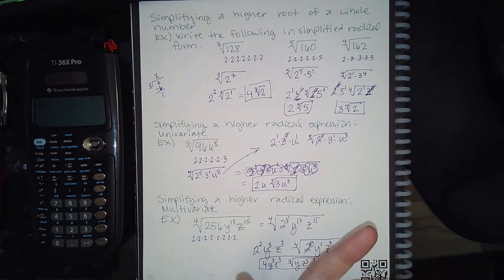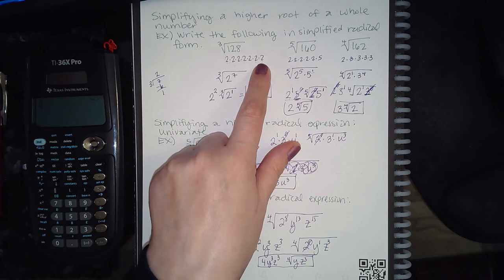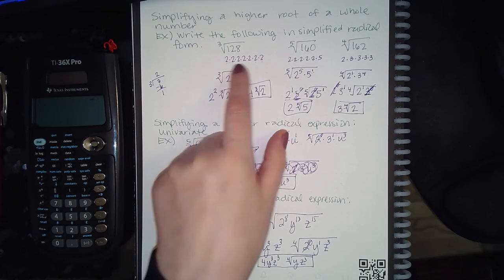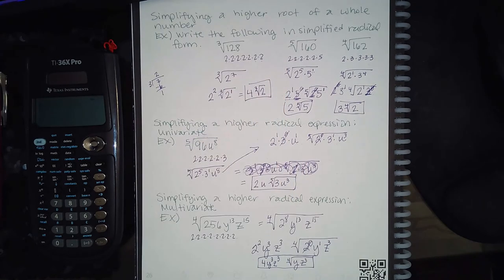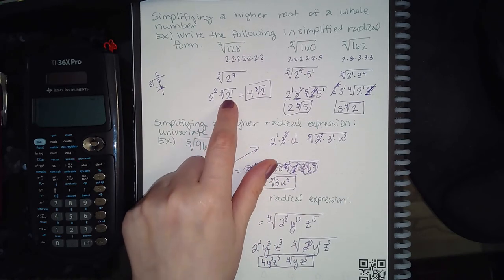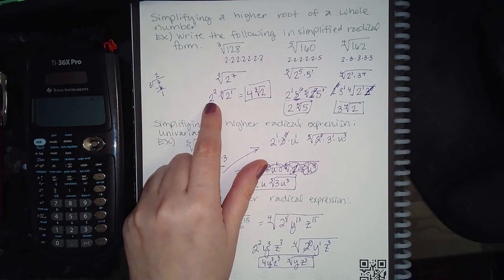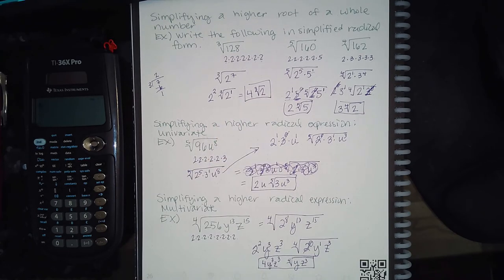In your packet of notes you have a prime factorization chart. Looking up 128, its prime factorization is all twos — seven of them — so 128 = 2⁷. I put a 2 on the outside and a 2 on the inside and apply the division method: 3 goes into 7 twice with 1 left over. So 2² = 4 comes out and 2¹ = 2 stays inside, giving a final answer of 4 times the cube root of 2.